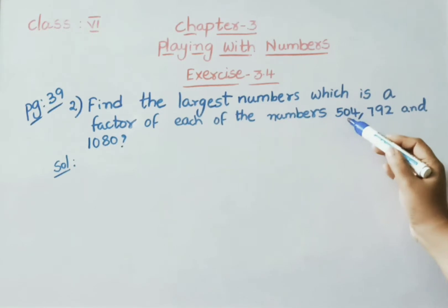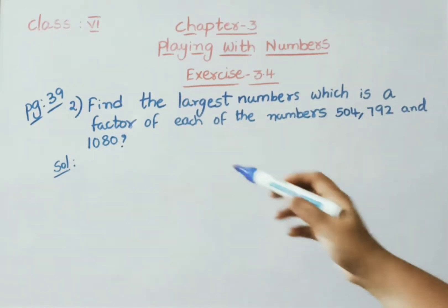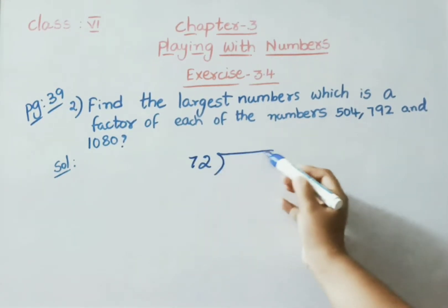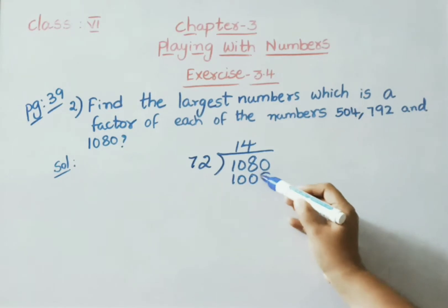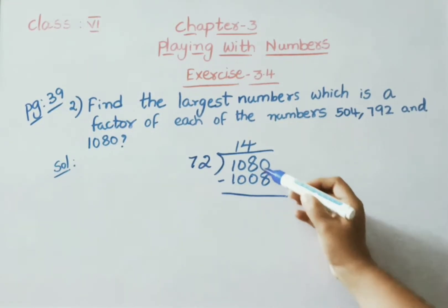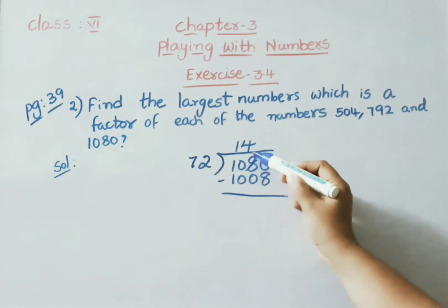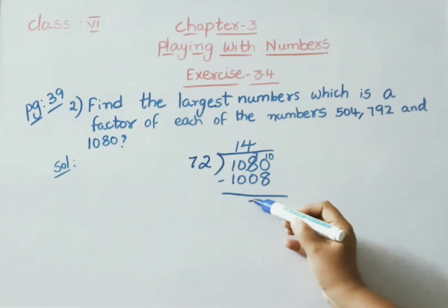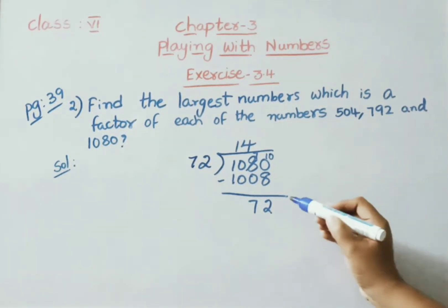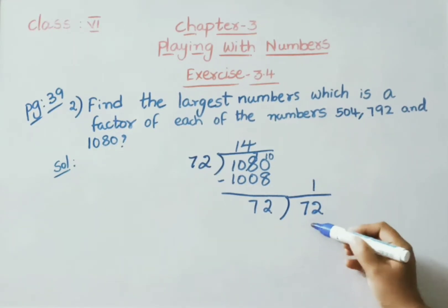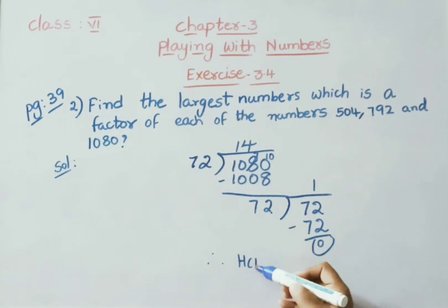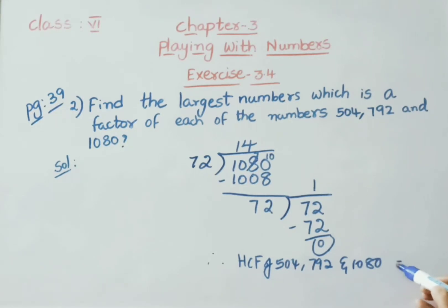HCF is 72. Now, HCF for 504 and 792 is 72. With this 72, we are going to divide 1080. 72, 14 is 1008. Let us subtract. If you take borrow, it becomes 10 and this becomes 7. 2, 7 minus 0 is 7, 10 minus 10 is 0. Now, we got remainder 72. Finally, therefore, HCF of 504, 792 and 1080 is 72.